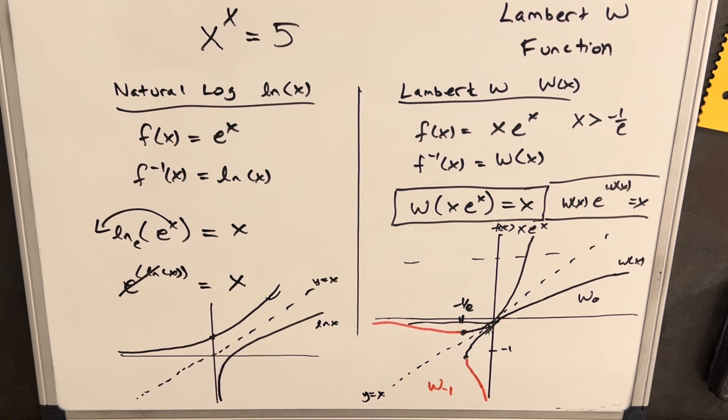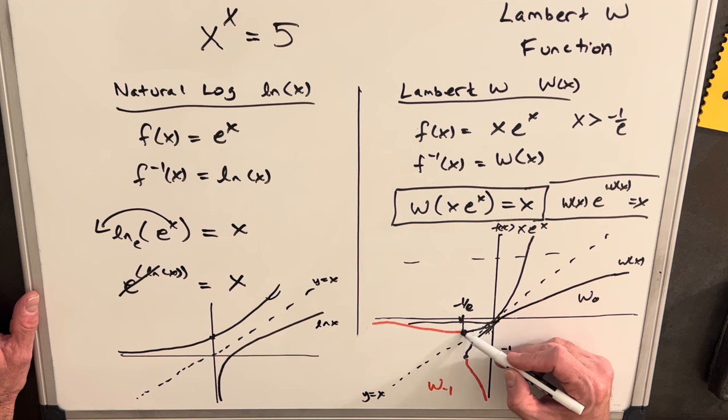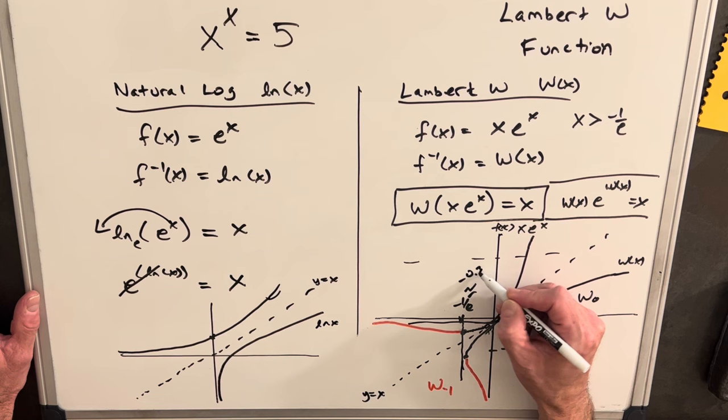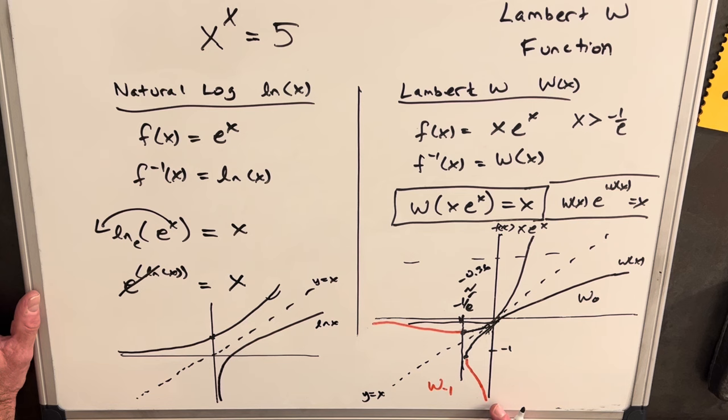Sorry, I'm trying to clean this graph up because this minus one over e value, this is close to around minus 0.36. That's really useful to know because when we're trying to look at this and we want to find out if we have real solutions or not, we have a few different cases.